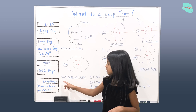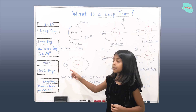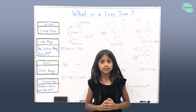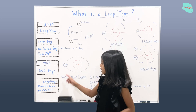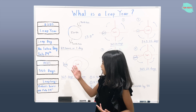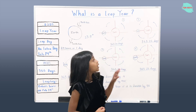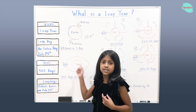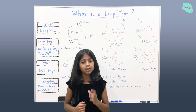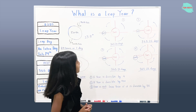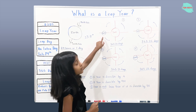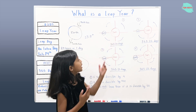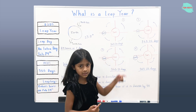Is it exactly 365 days for the Earth to complete one rotation around the Sun? Not exactly. Technically, it doesn't take exactly 365 days for the Earth to orbit the Sun — it takes a little bit more. When the Earth orbits the Sun, it starts from the red line and it takes 365.25 days.